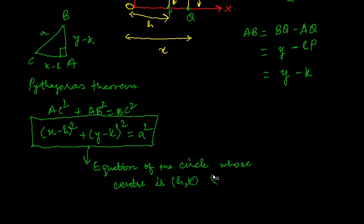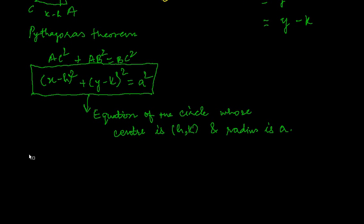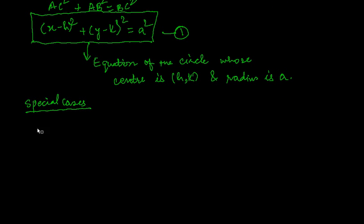Now let us look at some special cases. Suppose we are given some special property of a circle — how will this equation be modified? The first case is that the origin O is lying on the circle.